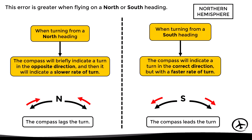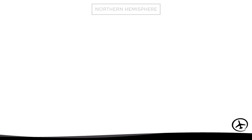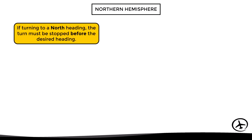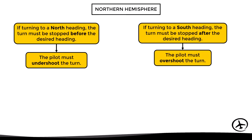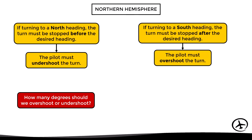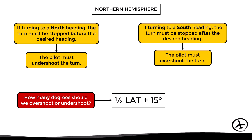From an operational perspective, to compensate for these errors in the northern hemisphere: if turning to a north heading, the pilot must undershoot the turn — stopping before the desired heading is indicated. If turning to a south heading, the pilot must overshoot the turn — stopping after the desired heading is indicated. The number of degrees to correct can be calculated with this formula: overshoot or undershoot equals half the latitude plus 15 degrees, applicable only at mid-latitudes.